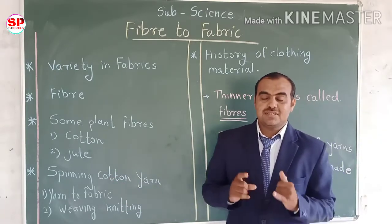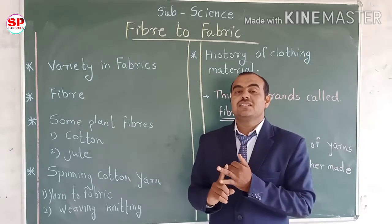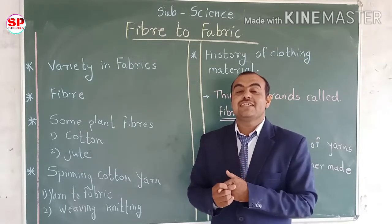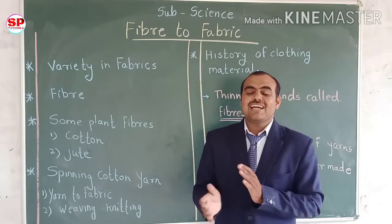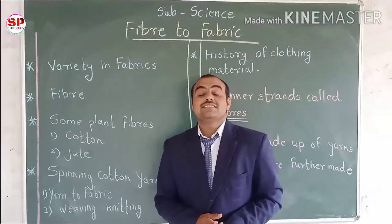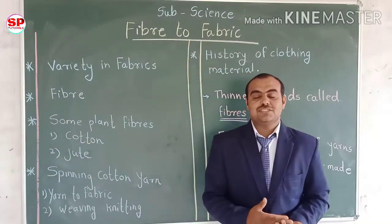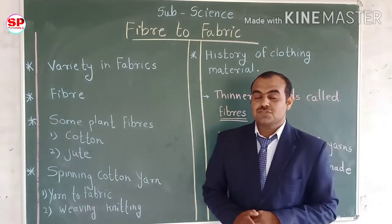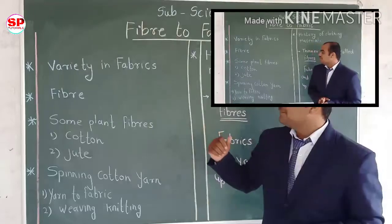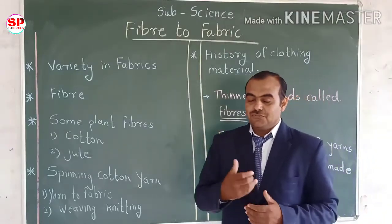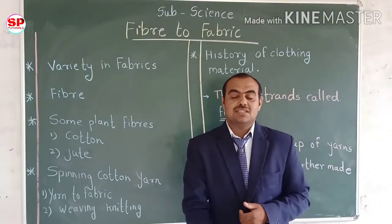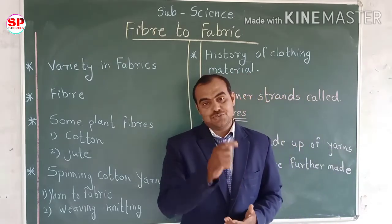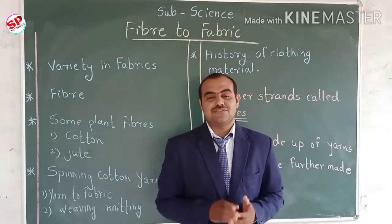Examples of synthetic fibers include nylon, rayon, terylene, and teripol — all obtained from industrial processes. These are called synthetic fibers. We are going to discuss the next part on the variety of fabrics in detail in the next video. Until then, stay tuned, stay home, stay safe. Thank you.